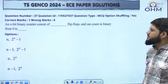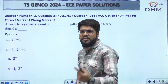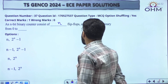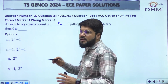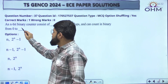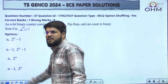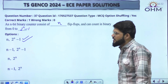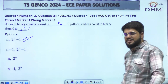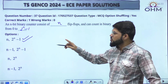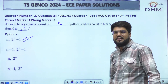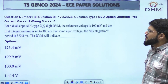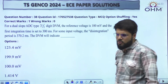An n-bit binary counter consists of how many flip-flops? For every bit to store, you need one flip-flop, so an n-bit binary counter has n flip-flops. It can count a maximum of 2^n states, from 0 to 2^n − 1. Straightforward — option number E. Total number of states maximum is 2^n, counting from 0 to 2^n − 1.